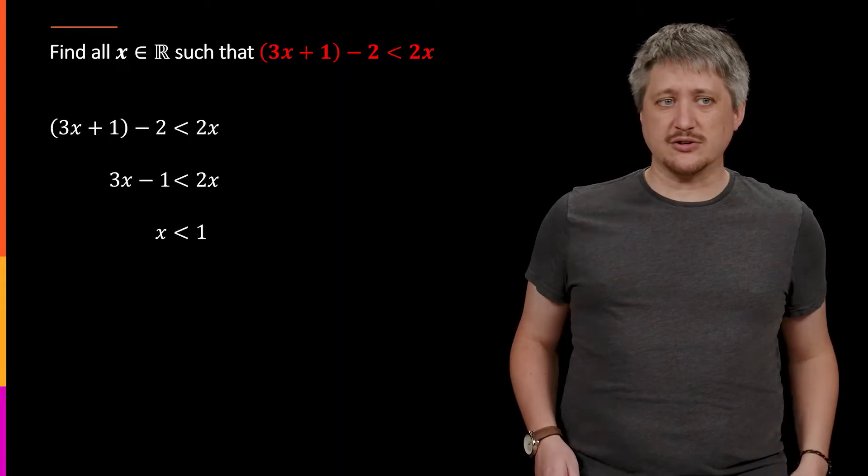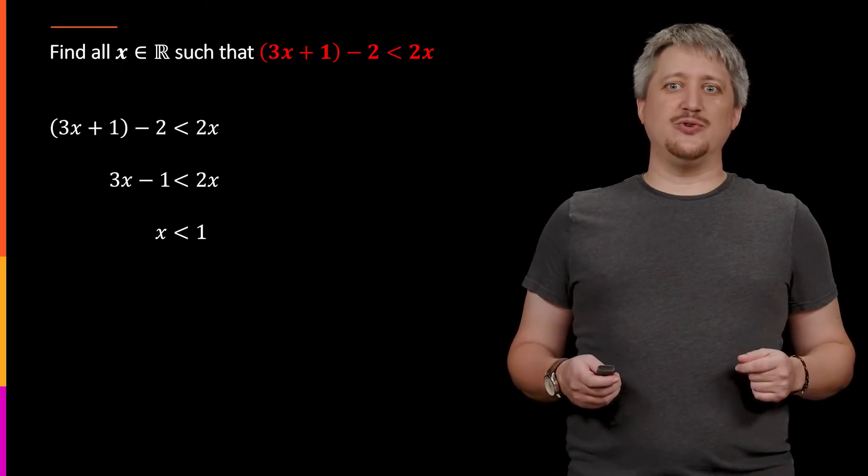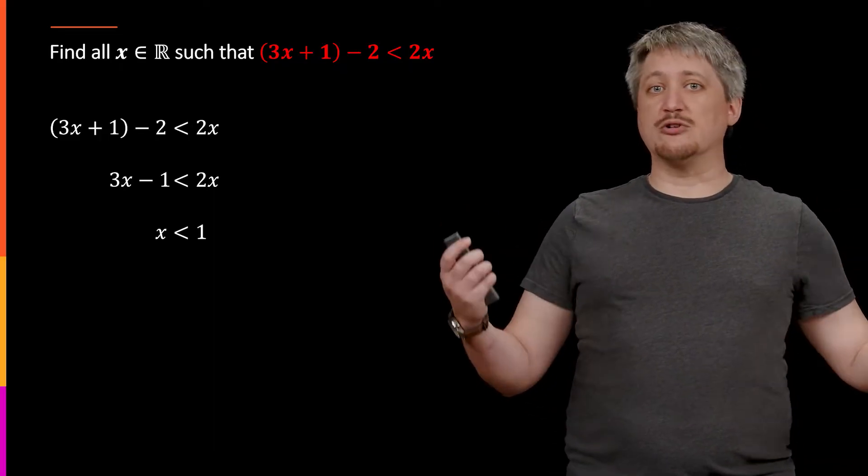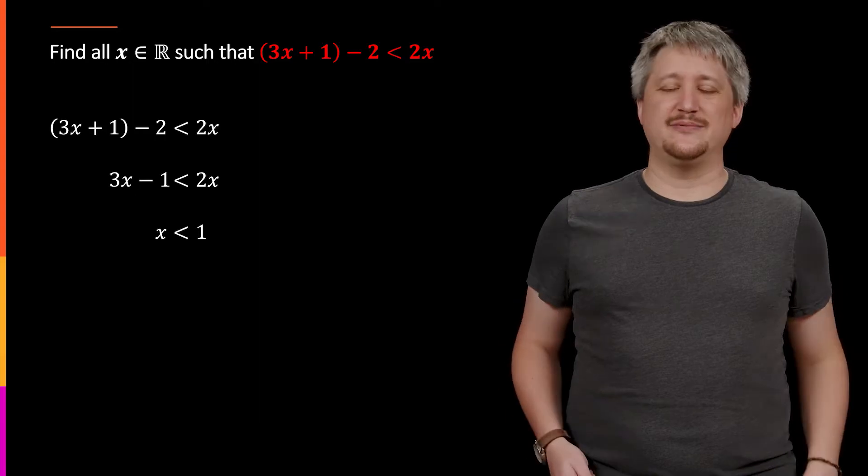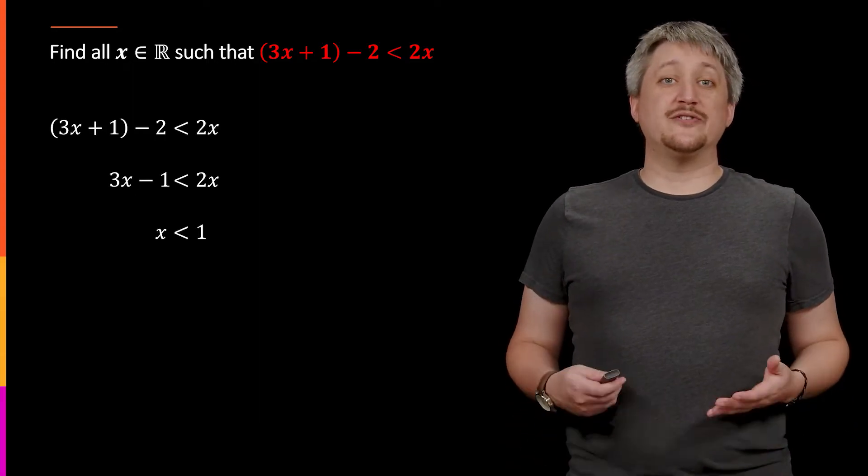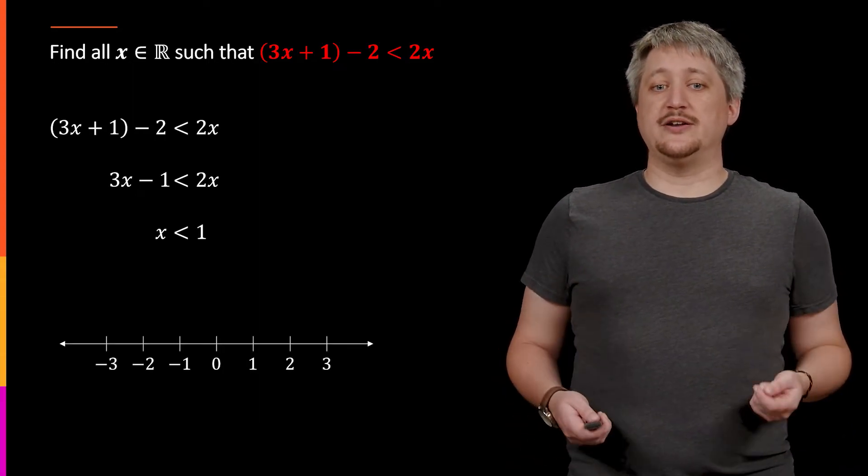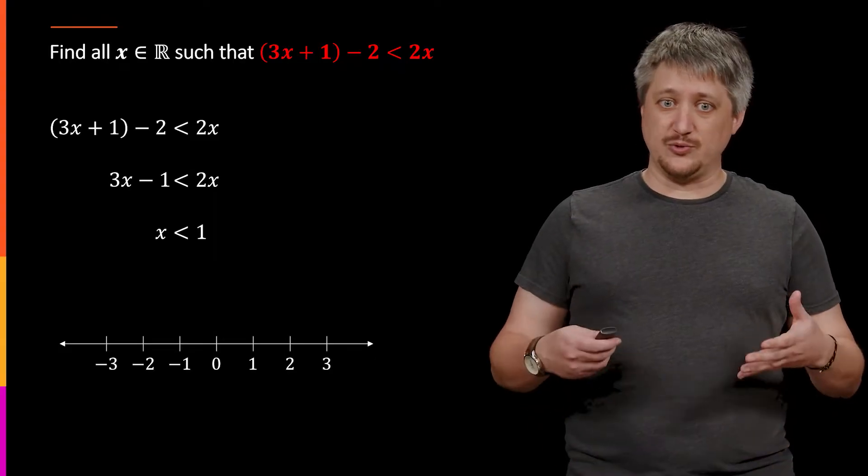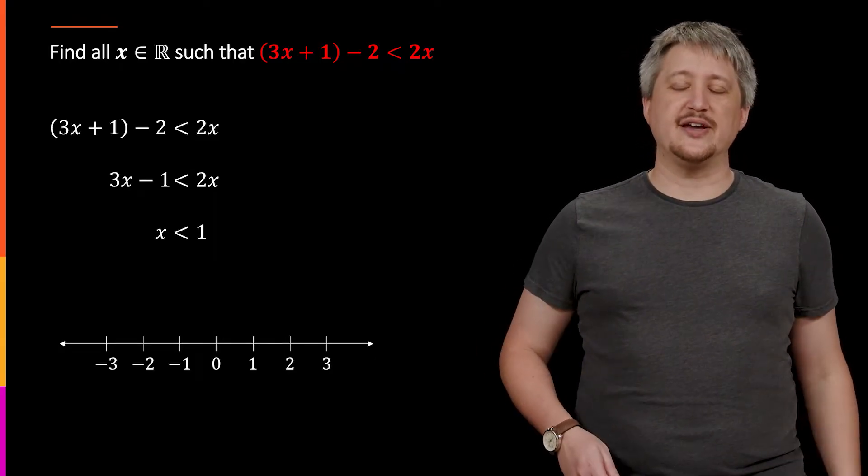Now this is a way of writing the solution, but to be clear, this is a whole bunch of different numbers. In fact, any number that is strictly less than 1 is an answer. So 0 works, negative e works, 22 over 37 works, like all kinds of stuff. Another way we could represent this though, is by putting it on a number line.